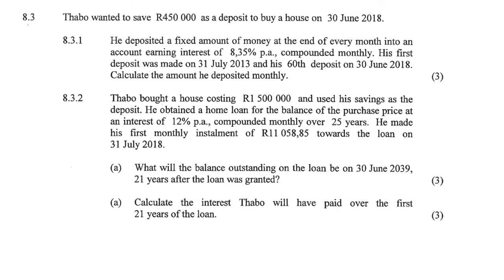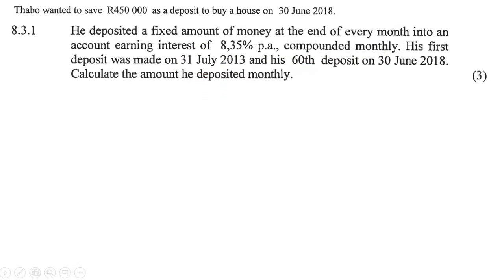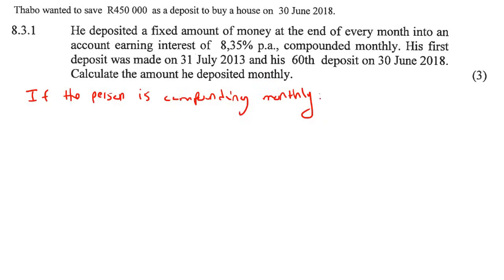I'm going to break every question up into individual questions on each slide, just to keep it neater and give us more space to work. They tell us that he deposits a fixed amount of money at the end of every month into an account earning interest. What you must remember with Grade 12 future value and present value is the following: if the person is compounding monthly, the first payment must always take place after one month.